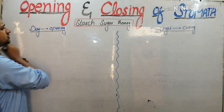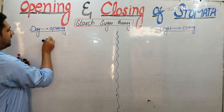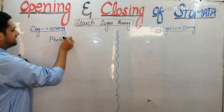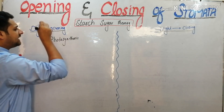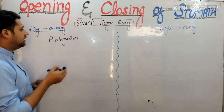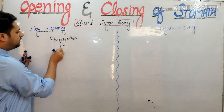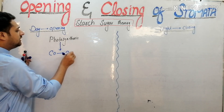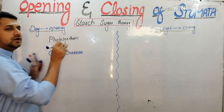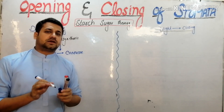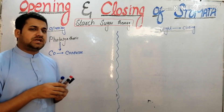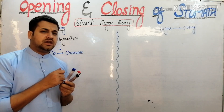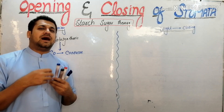In the daytime, the process of photosynthesis uses carbon dioxide. This carbon dioxide is consumed by the dark reaction, so the quantity of carbon dioxide is reduced. This reduction affects the concentration of hydrogen ions.